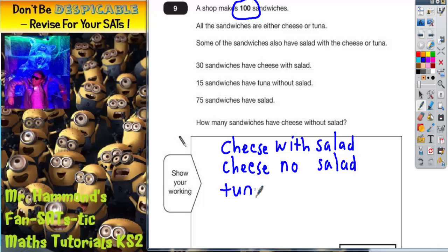We've got tuna with salad. And we've got tuna with no salad. There are only four types of sandwich.